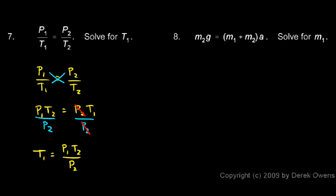In example 8, we have M2 times G equals M1 plus M2 times A. This is another equation from physics. It shows up in some problems dealing with Newton's laws of motion. M1 and M2 are just two masses. G is the acceleration due to gravity. It's just a number. And A is the acceleration of the masses. We're told to solve this for M1.